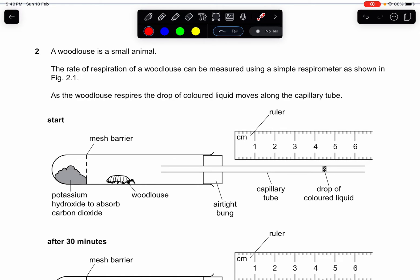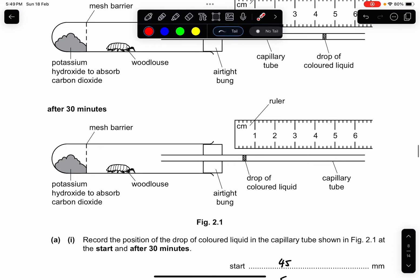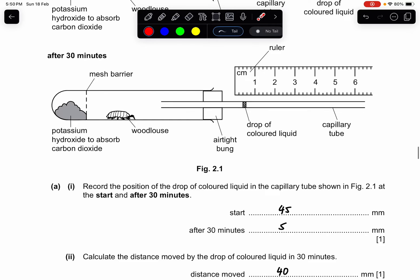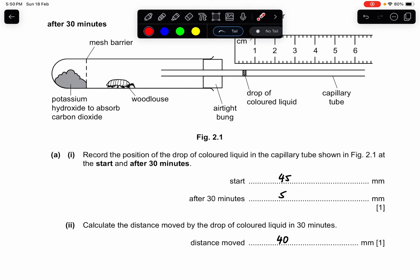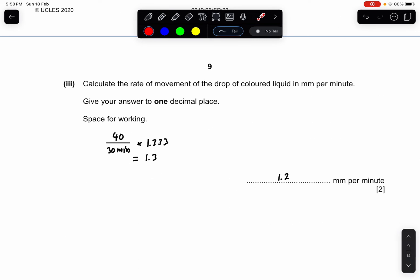Question 2: a woodlouse is a small animal. The rate of respiration of a woodlouse can be measured using a simple respirometer as shown in figure 2.1. As the woodlouse respires, the drop of colored liquid moves along the capillary tube. This is between the start and 30 minutes. It means it went to the left-hand side. Record the start of the drop of the colored liquid in the capillary tube shown in figure 2.1 at the start and after 30 minutes. I got 45 mm as the start and 5 mm after. Again, check the mark scheme and make sure your values are inside the range. Part 2 is just to calculate the distance moved within 30 minutes. So take the difference and you get 40 mm.